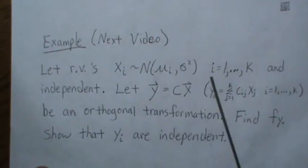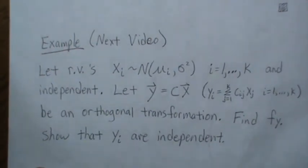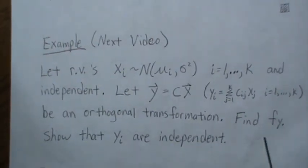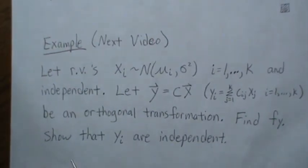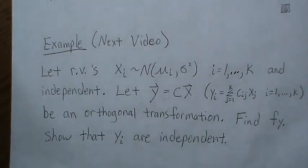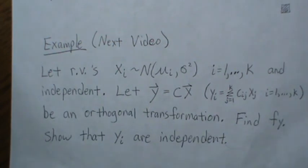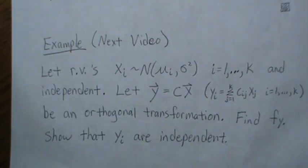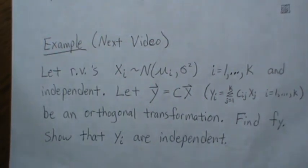The first example will show that an orthogonal transformation of independent normal random variables is also normal, and that the Y_i's are independent as well. That's all I have for today — hopefully you enjoyed it. If you did, please like the video and subscribe so you don't miss the next one. Thanks, bye.